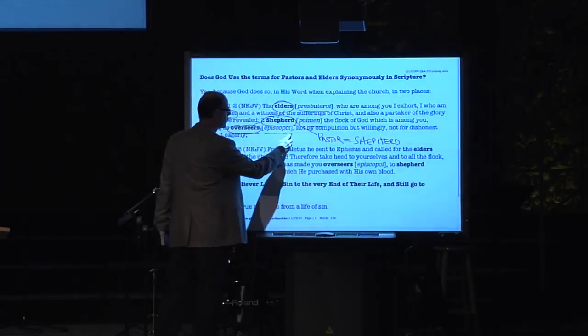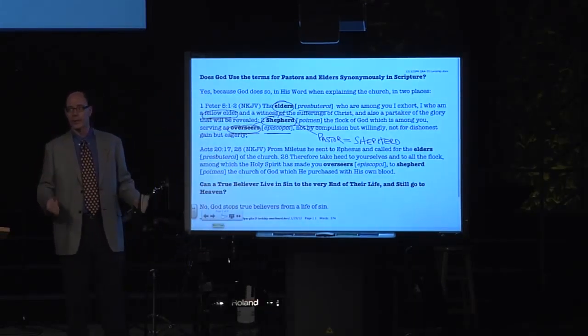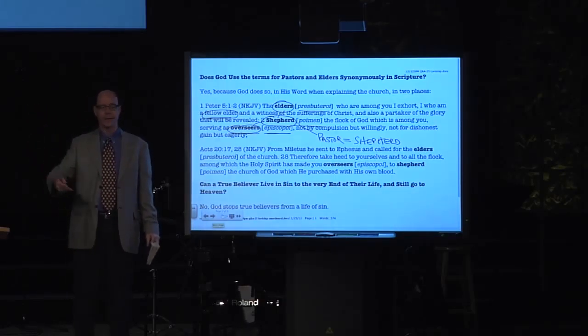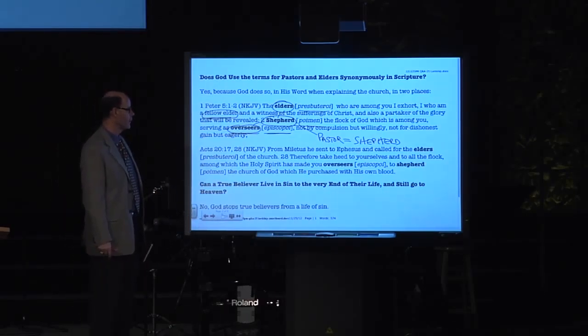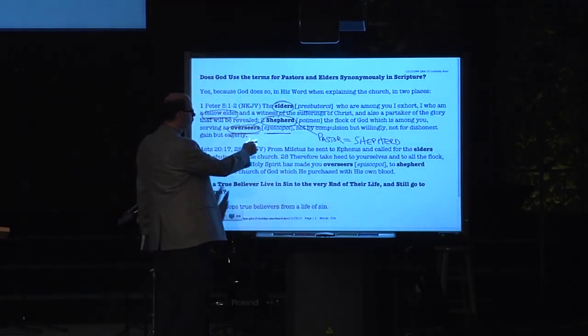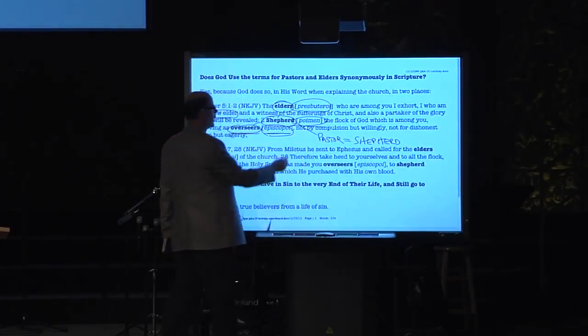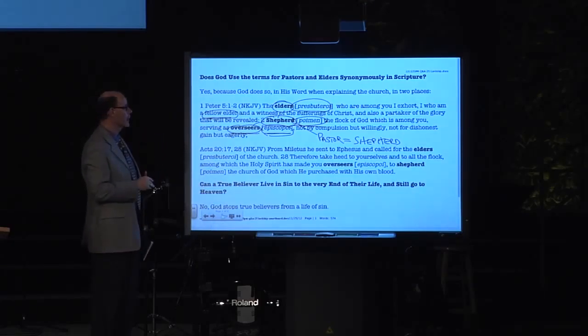And then here's the overseer part - episcopos. You've heard of the Episcopalian church. Now they've all gotten away from their original moorings. The Episcopalian church is basically Roman Catholic British Anglicans that moved to America. But the terms that Episcopalians get and Presbyterians get and that Baptist pastors come from are all synonymous leaders of the church, and they are to serve not by compulsion but willingly, not for dishonest gain but eagerly.